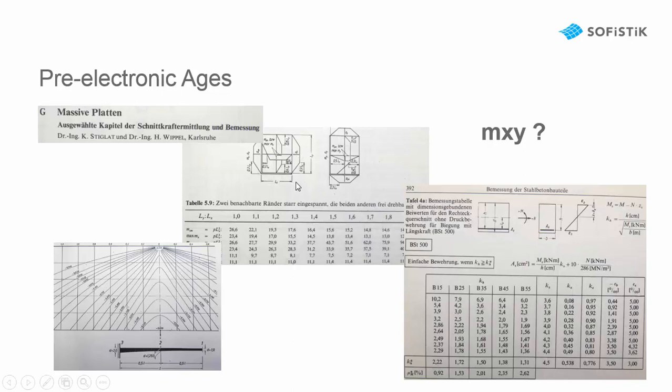How did we design this in the past? We had our tables for slabs and influence areas. And these bending moments in Mx and My were just calculated in a uniaxial simple design.